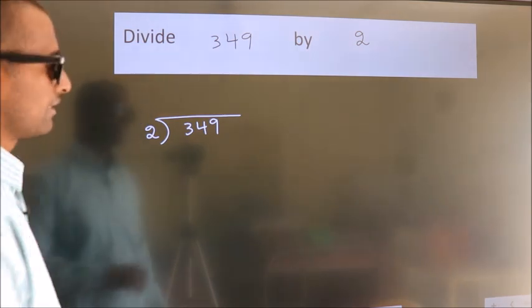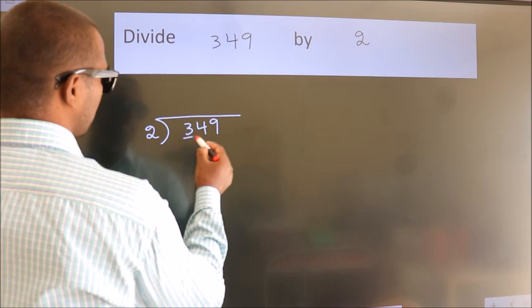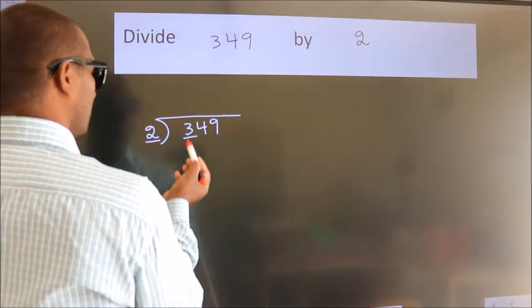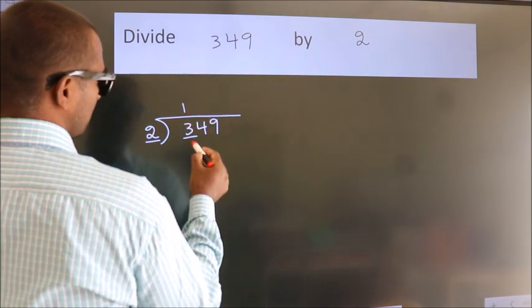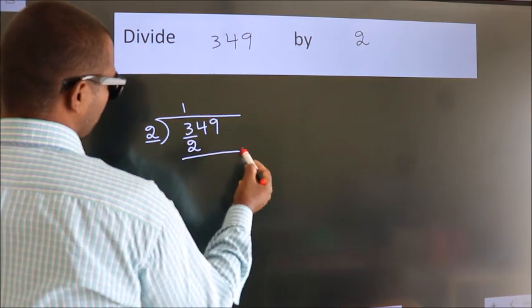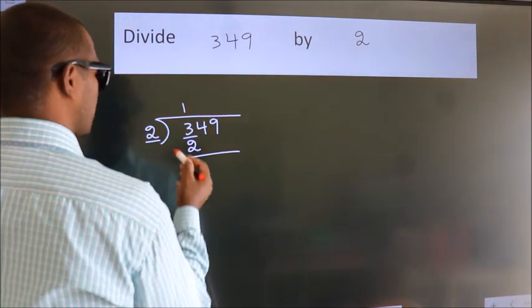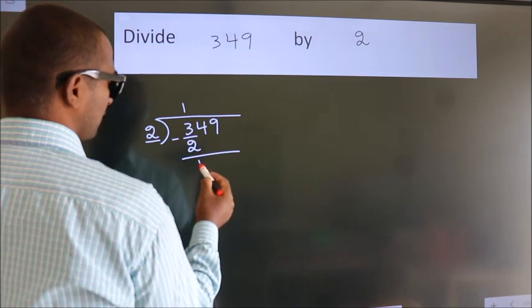Next, here we have 3 and here 2. A number close to 3 in the 2 times table is 2 times 1 equals 2. Now we subtract and get 1.